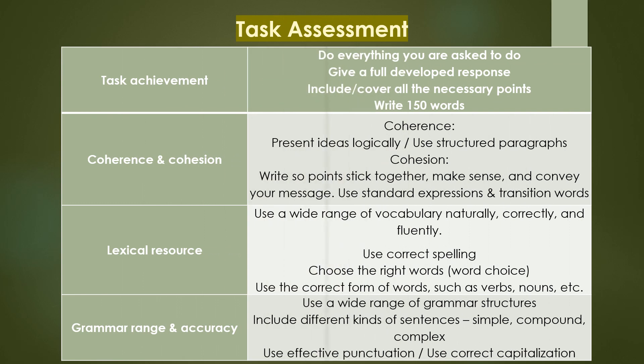Now let's take a look at the task assessments. 25% goes to task achievement, which means you need to answer everything you're asked to do in the question. The other 25% goes to coherence and cohesion — use structured paragraphs and make standard expressions. The other 25% is lexical resource, using a range of vocabulary, and the last is grammar range and accuracy. Make sure you include different kinds of sentences ranging from simple, compound, and complex.